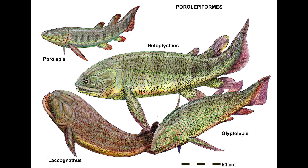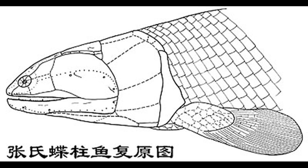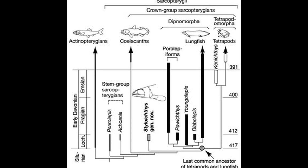Porolepiformes had pectoral fins, pelvic fins, anal fins, and multiple dorsal fins, while our extant lungfish have just pectoral and pelvic fins. Moving outwards from our common ancestor with the lungfish, the next Sarcopterygian we meet is the early Devonian Styloichthese. Styloichthese's affinities have been controversial — is it a stem coelacanth, or a stem member of the clade containing lungfish and tetrapods? Recent analyses have slightly favored the latter hypothesis, but the debate isn't over.